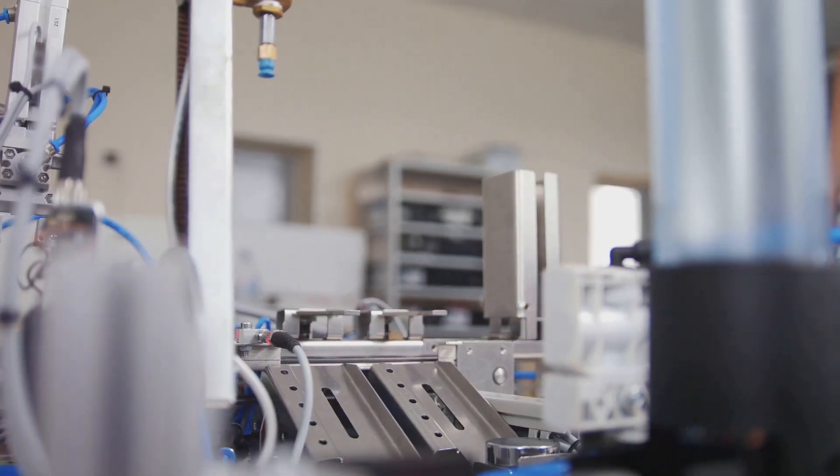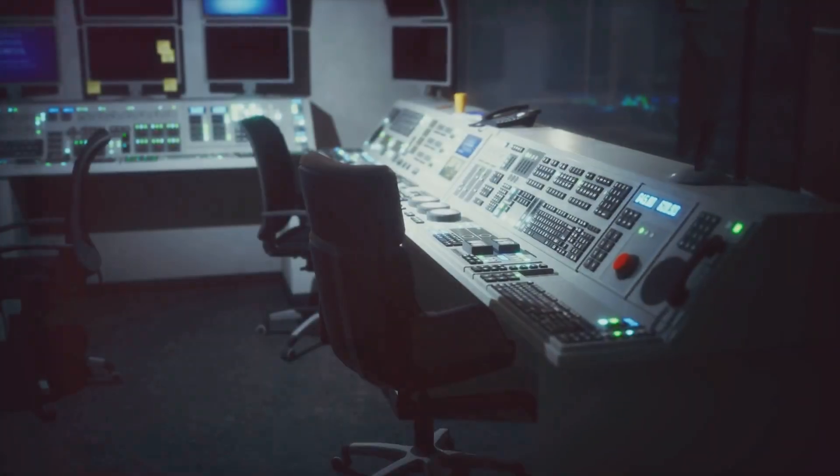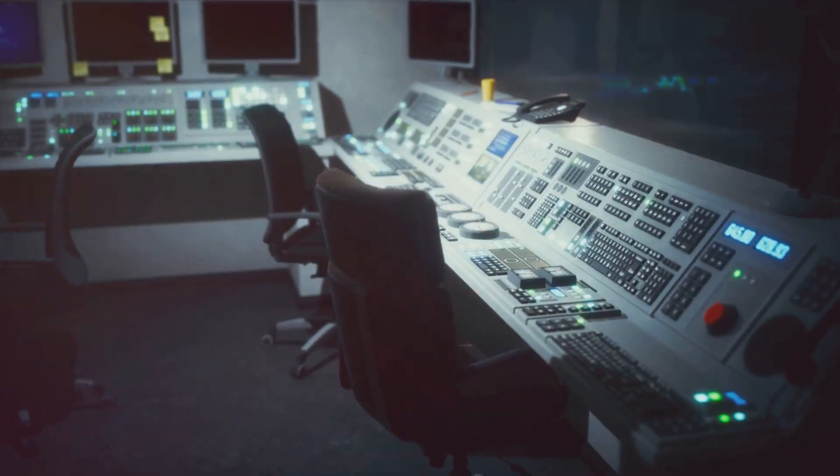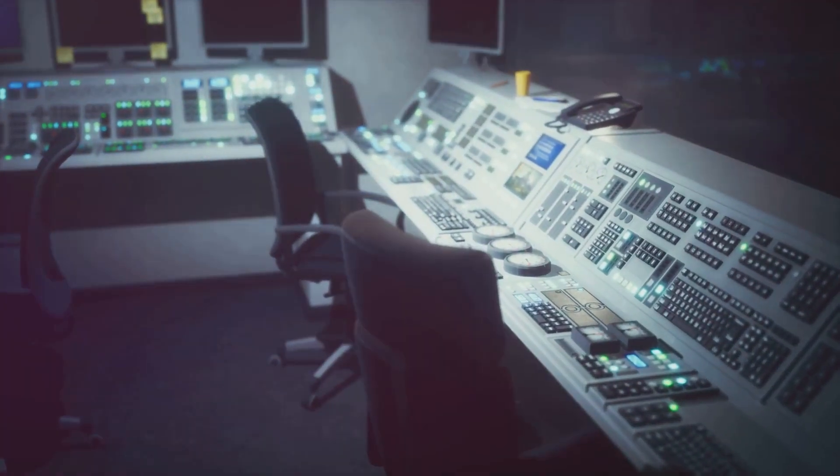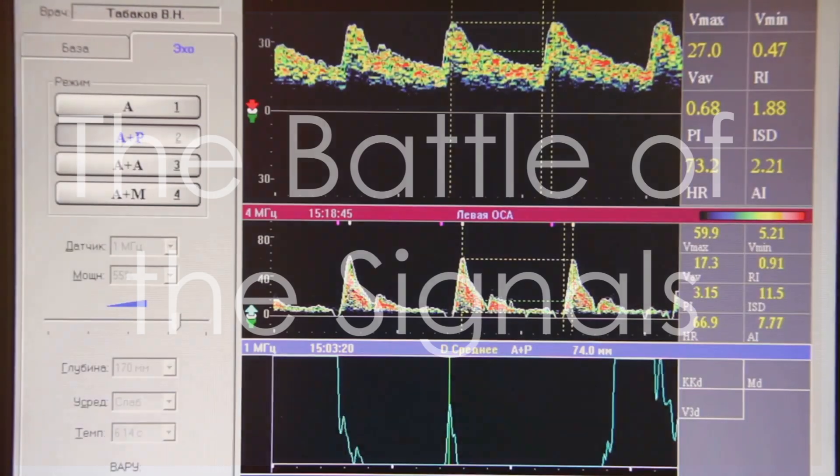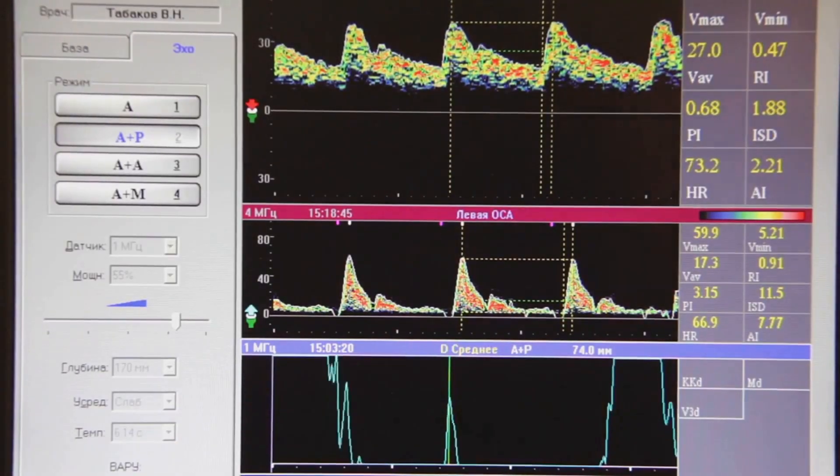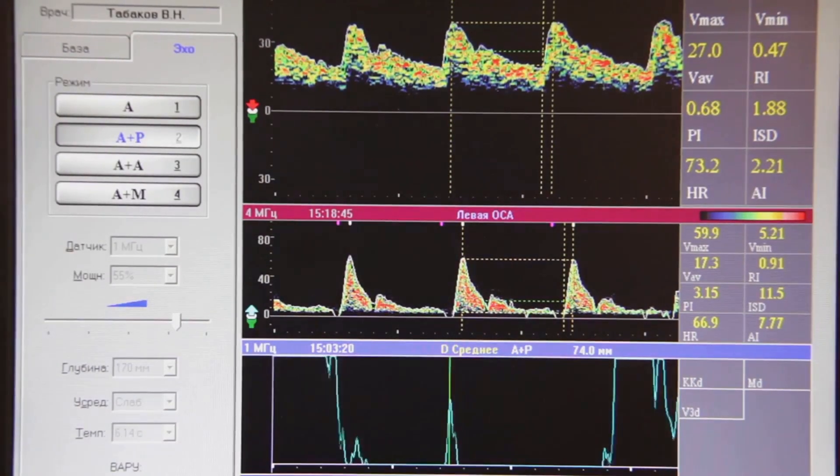Smart transmitters are like the smartphones of the instrument world, packed with features and smarts. Control loops are like the circulatory system of an automated process, constantly circulating information and adjustments.